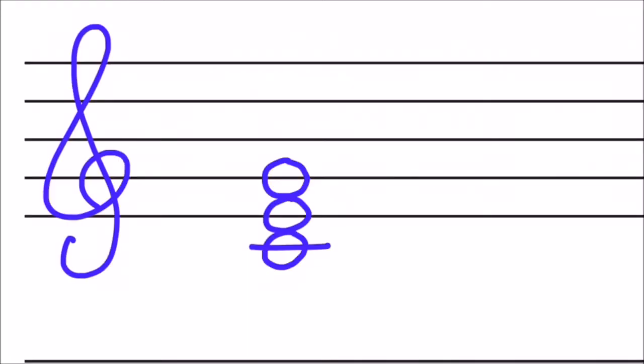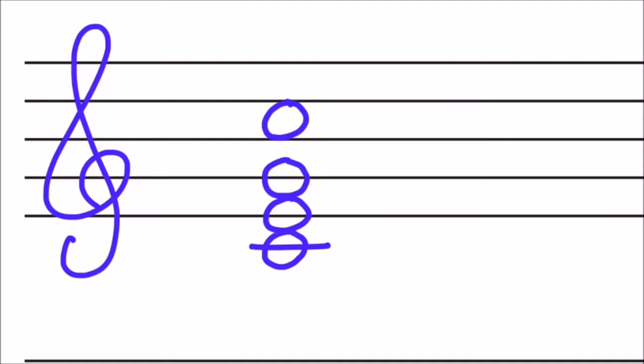A major seventh is one semitone below the root, and a dominant seventh is two semitones below the root. Here's another way of thinking about that. Every C major chord has many C roots. We can draw one at the top, for example. When we drop that root down one semitone, we create a C major seven.